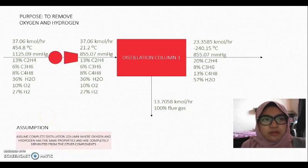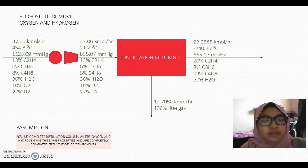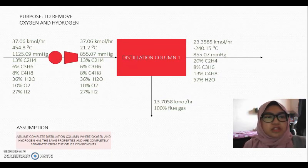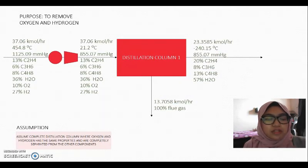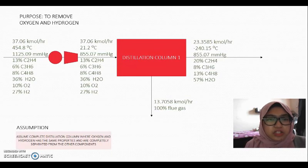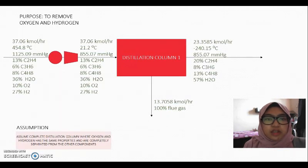For distillation column 1, the purpose is to remove oxygen and hydrogen. The feed coming in is 37.06 kmol per hour with the temperature of 454.8 degrees Celsius and pressure of 1,125.09 mmHg. The composition is 13% ethylene, 6% propylene, 8% butene, 36% water, 10% oxygen and 27% hydrogen. It will go through a compressor and heater to lower the temperature and the pressure to 21.2 degrees Celsius and 855.07 mmHg. It will go through a distillation column to remove flue gas which is composed of oxygen and hydrogen. The assumption made is that it is a complete separation where oxygen and hydrogen has the same properties and it is completely separated from the other hydrocarbon.